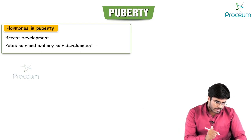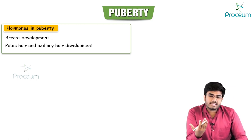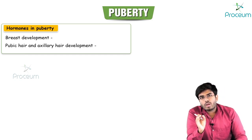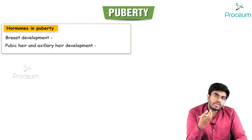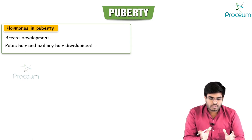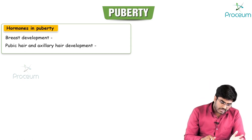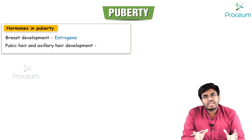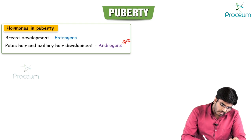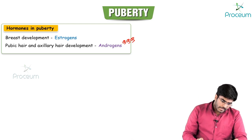Regarding hormones in puberty: the most important hormone is estrogen, synthesized from the ovary when acted upon by FSH. Estrogens are responsible for breast development. However, pubic hair and axillary hair development in females depend on androgens — specifically adrenal androgens. This is a very important MCQ point.